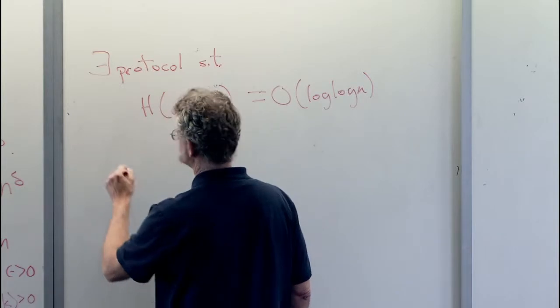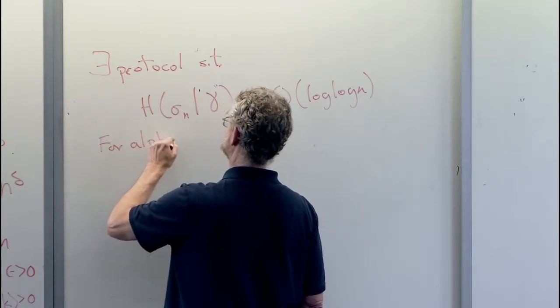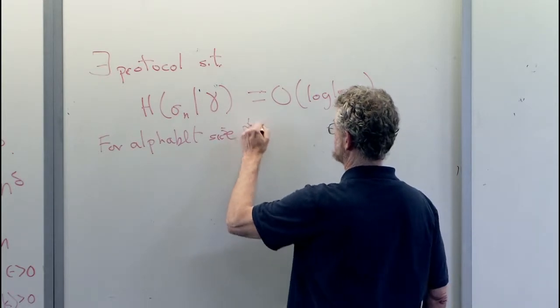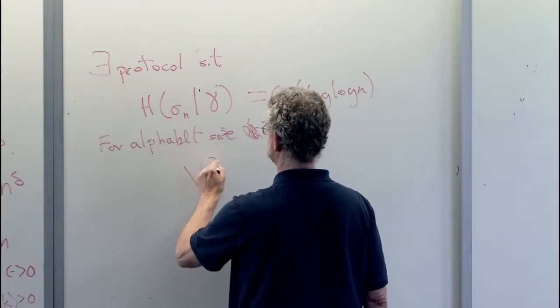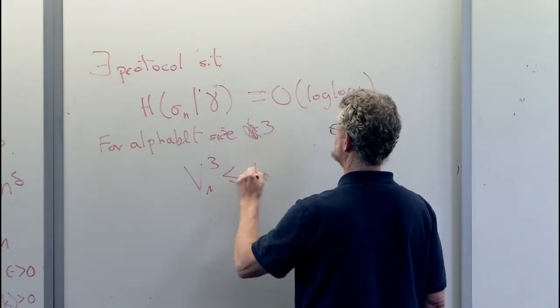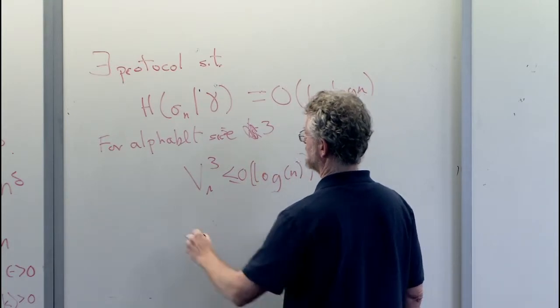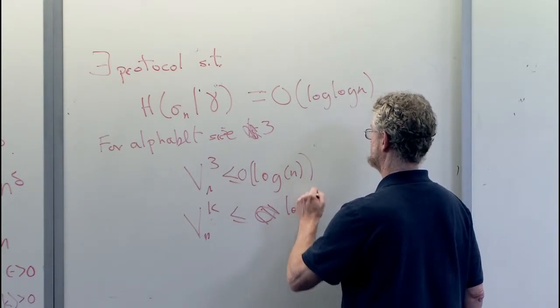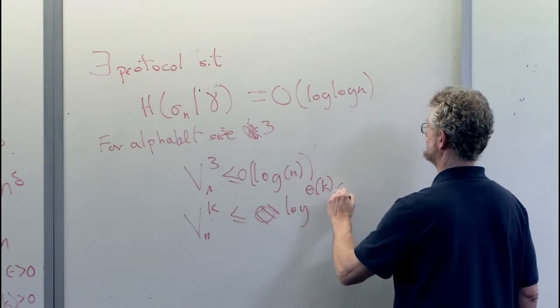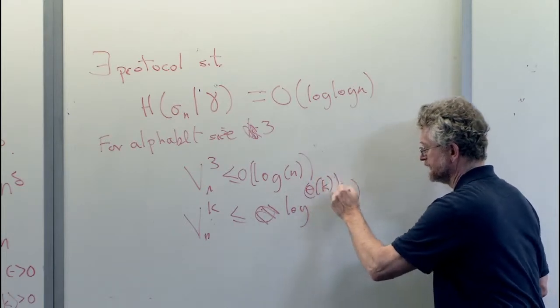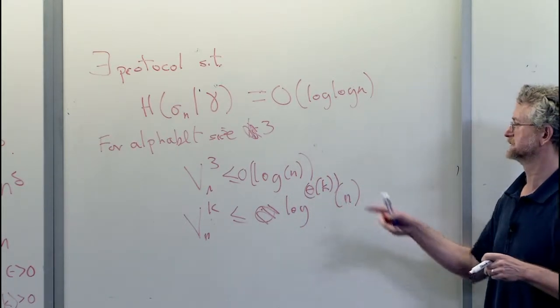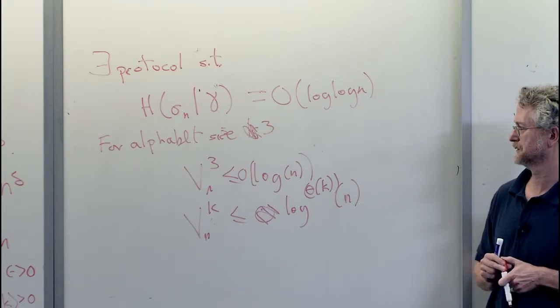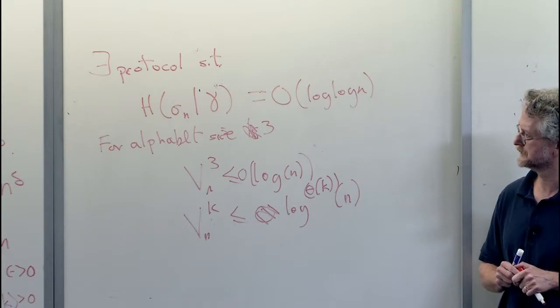For alphabet size K, Vn3 is less than or equal to order log n. And Vnk, by this I mean the iterated logarithm. So if I give you an alphabet of size 10, then there are protocols that go in log log log.